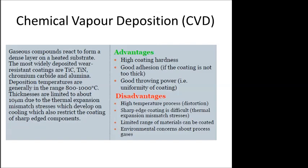In chemical vapor deposition (CVD), chemicals are introduced, made to react, and the nanoparticles evaporate and sediment over a substrate layer. Gaseous compounds react to form a dense layer on a heated substrate. The most widely deposited wear-resistant coatings are tin carbide, tin nitride, chromium carbide, and alumina. Deposition temperatures are generally in the range of 800–1000°C, and thickness is limited to about 10 micrometers due to thermal expansion mismatch stresses that develop on cooling, which also resists coating of sharp-edge components.